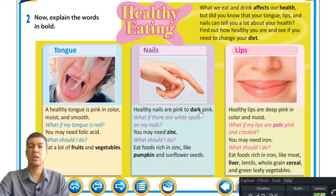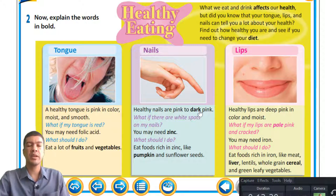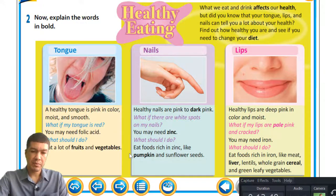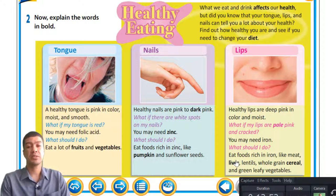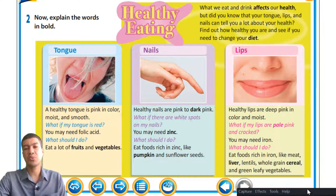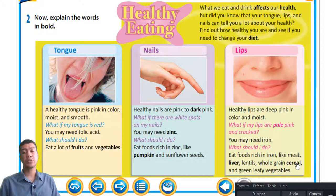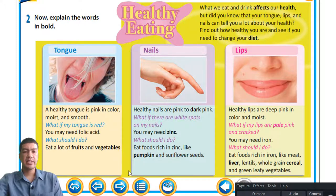The next word is 'dark' — healthy nails are dark pink in color. Zinc is a supplement needed for healthy functioning of your body. I don't need to explain pumpkin or liver — liver refers to the organ. Cereal is what you eat every morning; popular brands include Kellogg's or quick oats. Those are some of the cereals to consume for healthy lips, particularly whole grain cereals — Kellogg's falls in this category. Let's go on to our next page.